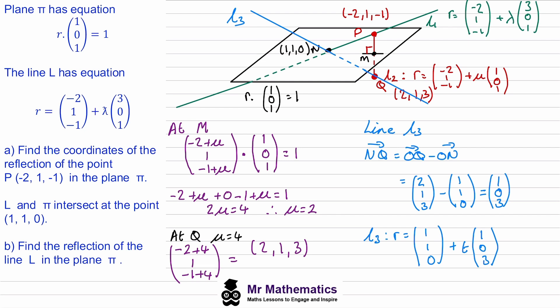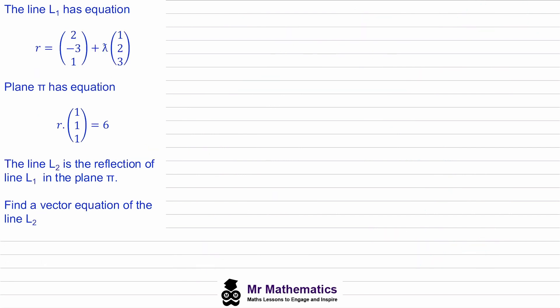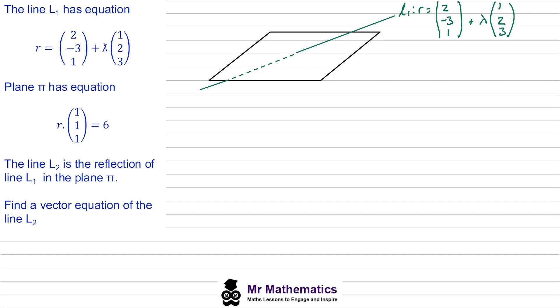Let's try another example. We're told that line L1 has this parametric equation and the plane has a scalar product equation. Line L2 is a reflection of L1 in the plane and we've been asked to find the vector equation of L2. Again the first thing to do is sketch a diagram. To find the equation of the reflected line L2, we take a point on L1, reflect it to get a point on L2, then find where L2 intersects the plane. First I'll work out where L1 intersects the plane and call this point N.